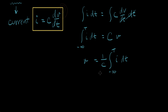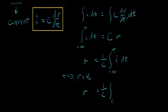Instead, we're going to pick a time T equals zero and say that the voltage on the capacitor was equal to some value V-naught at that point. Then we'll change the lower limit on our integral from negative infinity to T equals zero, and use the integral from zero to the time we're interested in. We account for all the time before T equals zero by simply adding V-naught — that's the starting point at time equals zero. Then the integral takes us from time zero until time now. This is the integral form of the capacitor equation.